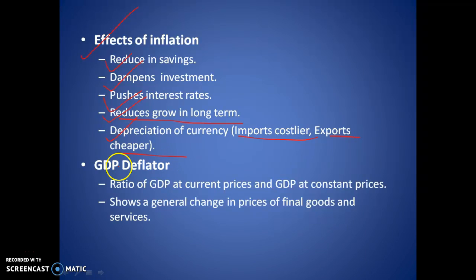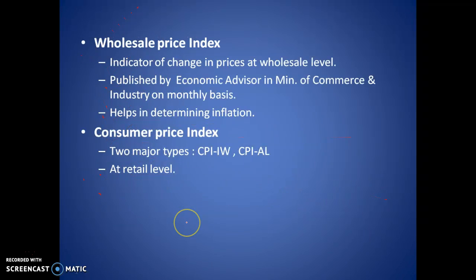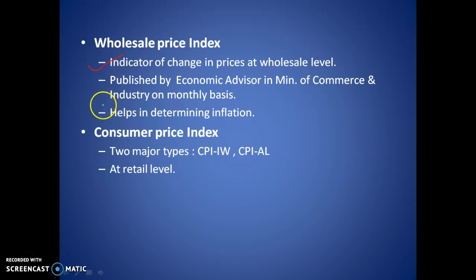The GDP deflator is the ratio of GDP at current prices to GDP at constant prices. It shows the general price change in final goods and services. Then we have the Wholesale Price Index — WPI — which is the indicator of prices at the wholesale level. It is more important to industrialists and helps in determining inflation at the general level. It is published by the Economic Advisor in the Ministry of Commerce and Industry on a monthly basis.